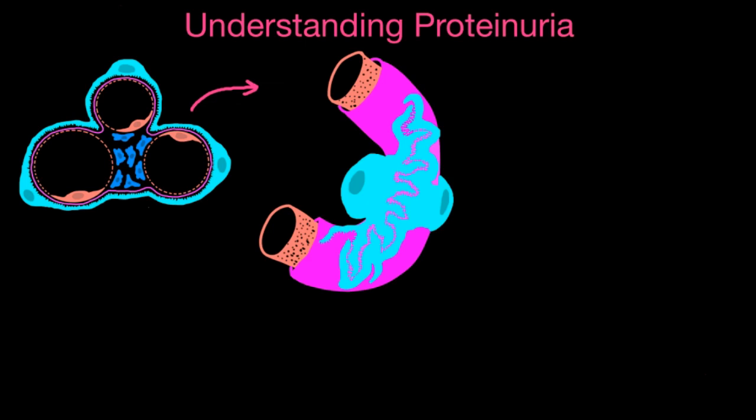Here you can see one capillary loop in isolation with the three different layers of the filtration barrier exposed. First is the capillary endothelial layer, which is fenestrated with large pores. Next is the glomerular basement membrane, represented by the pink layer. Sitting on top are podocytes — specialized epithelial cells — where neighboring podocytes have long projections with tiny foot processes that interlock, much like interlocking the fingers on each hand.